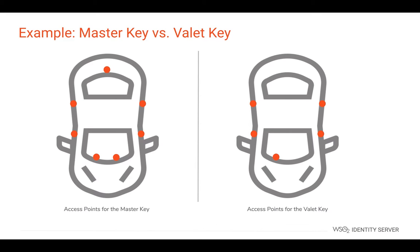To understand Access Delegation a bit more, let's take an example. Let's consider the functionality of a master key and a valet key. The master key enables you to control all the access points of your vehicle including the glove box and the boot. However, the valet key only supports functionality that is sufficient for a valet to park the car and has no access to the glove box or the boot. It only allows opening the driver's door and starting the car.